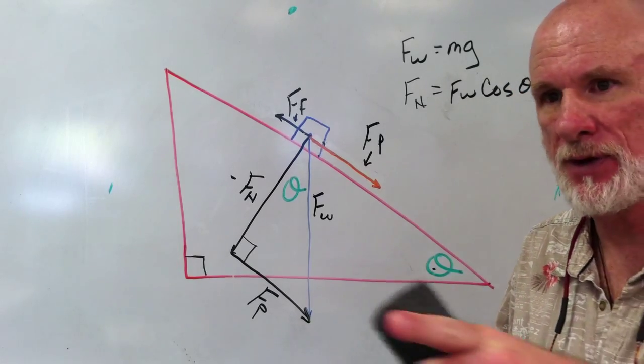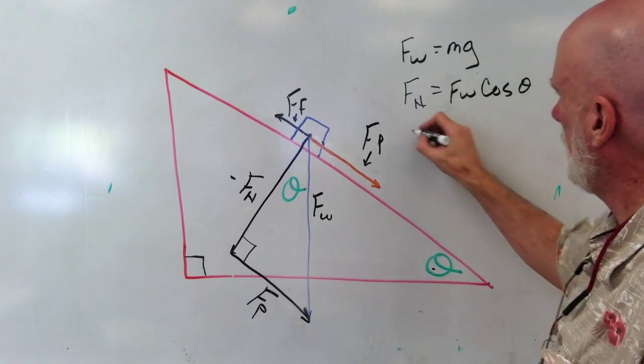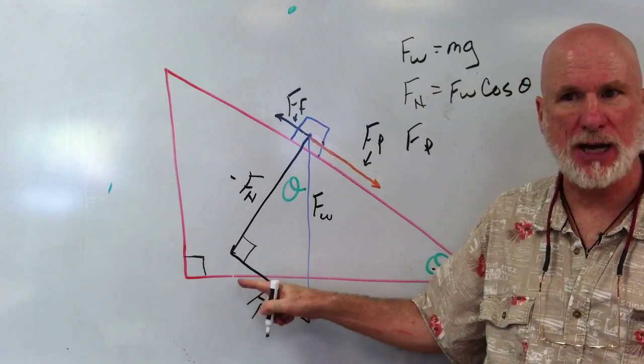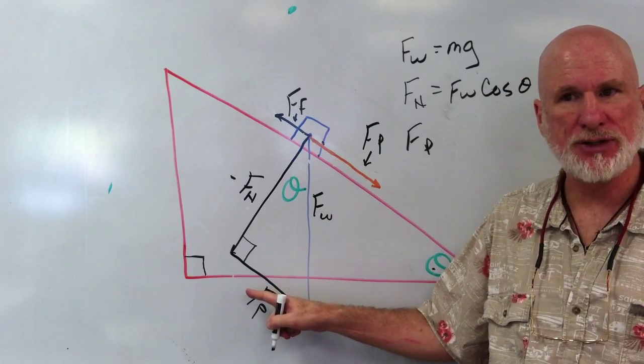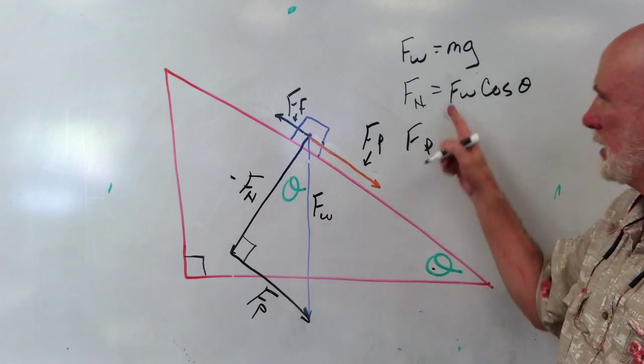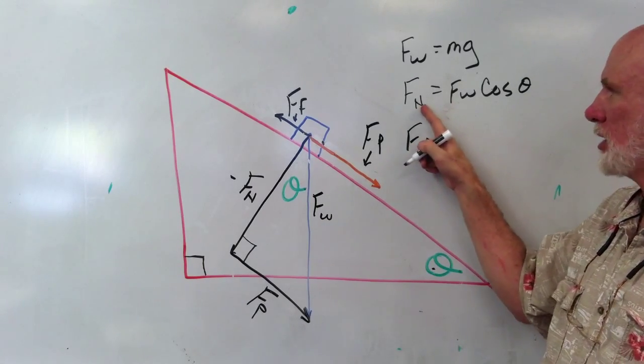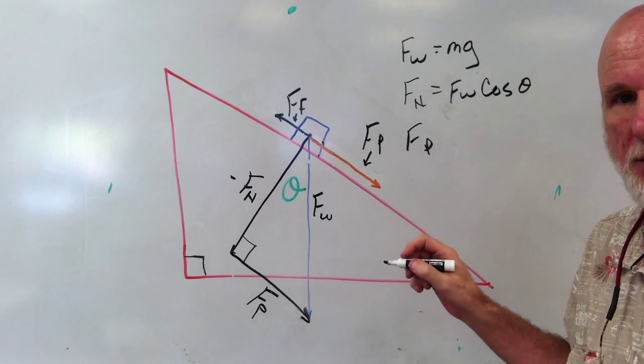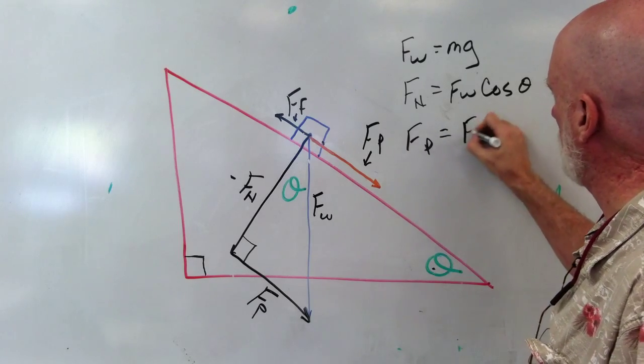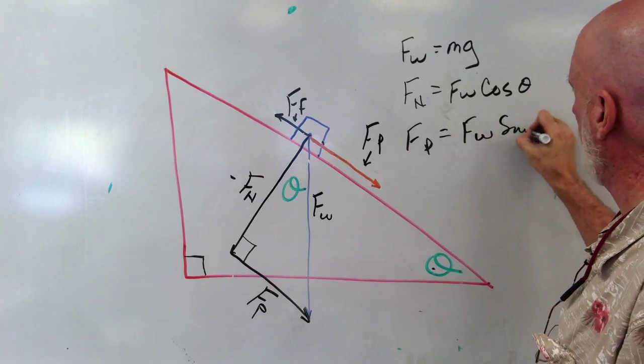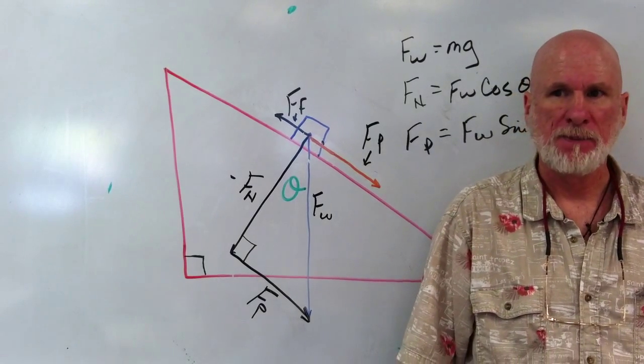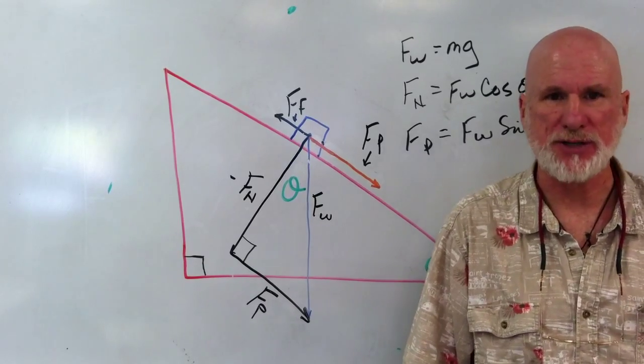Now, Fp would be opposite, would be sine. So it would be sine theta equals Fp over the hypotenuse, which is Fw. Just like the normal, cross multiplying. We'll do it the short way, a little mental math. So that would be Fw sine theta. Those are three very, very, very important equations.